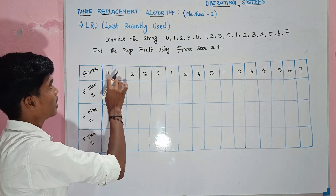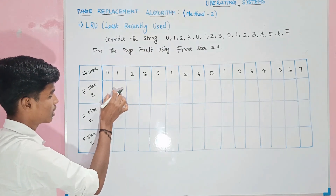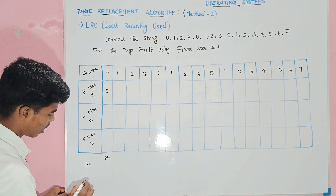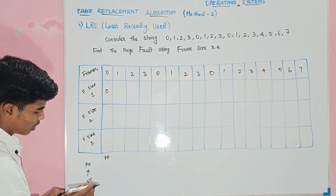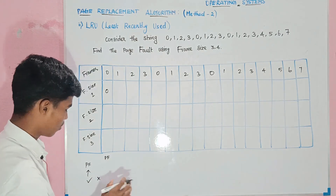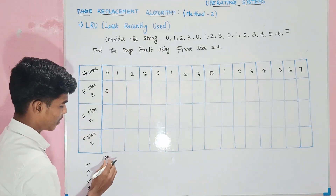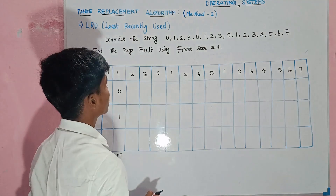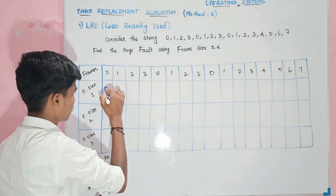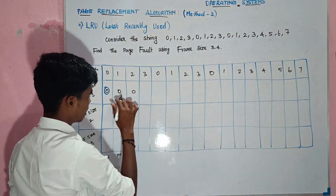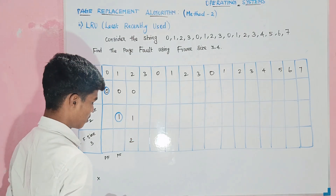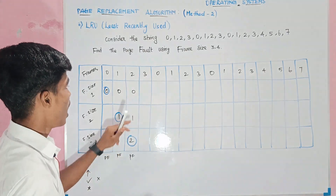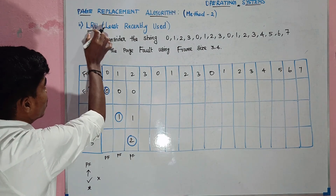This is basic operating system. We will insert the over value. Page fault occurs when a page is not found in the current frames. We track page fault ticks: page fault, then page fault, then 0 page fault, then page fault — 0 already. So page fault, page fault, page fault.